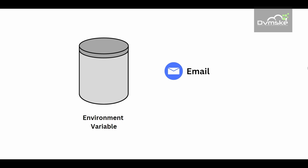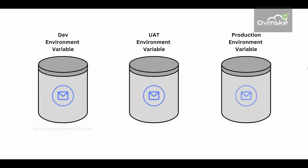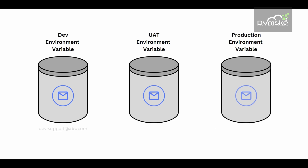Environment variables are a feature of Power Apps that allows you to store and reuse values across your apps, flows, etc. These are configuration elements that store data at an environment level — they are like global variables that you can define once and use anywhere. You can also change them without modifying your application or flow logic. The company creates environment variables for the three different environments and updates the email addresses from a central place, which updates the addresses in every flow.